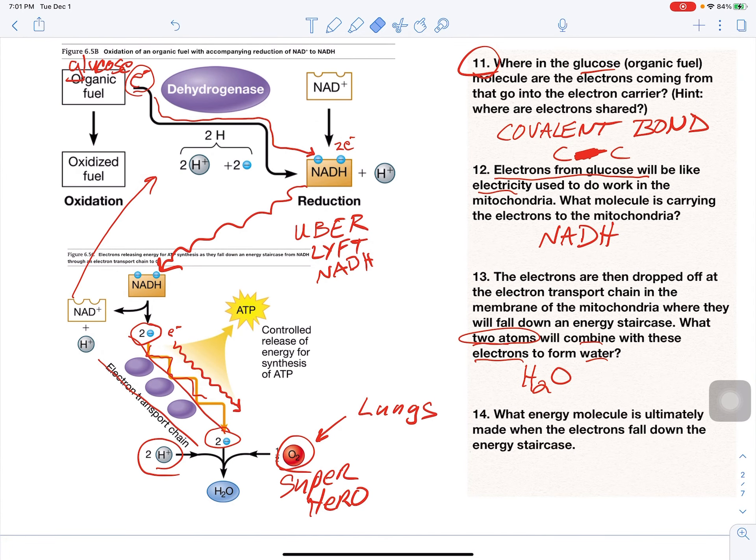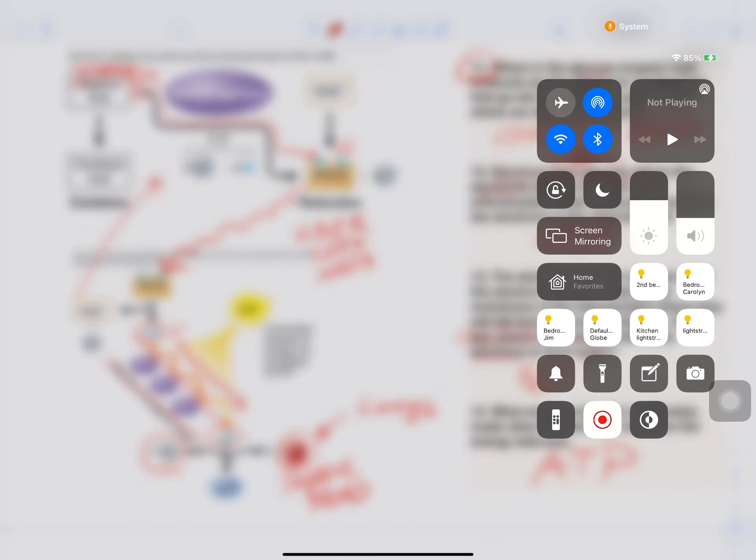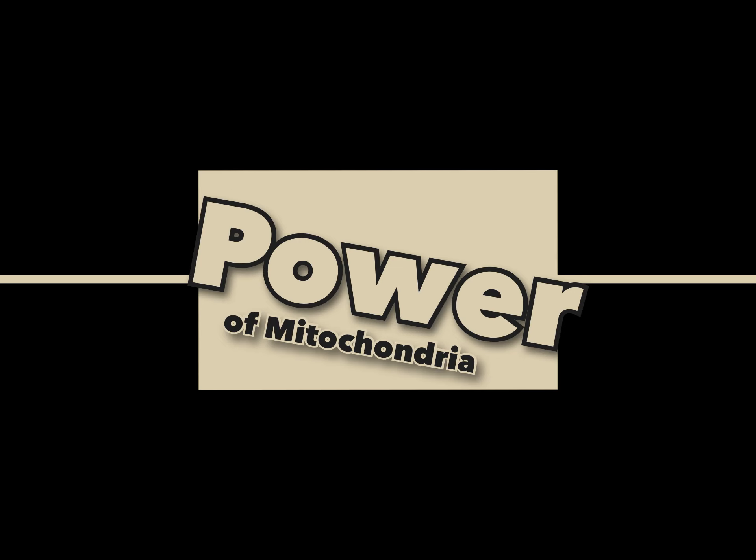What energy molecule is also ultimately made when the electrons fall down the energy staircase? We saw it. ATP. And we'll finish the next one. Next last thing.